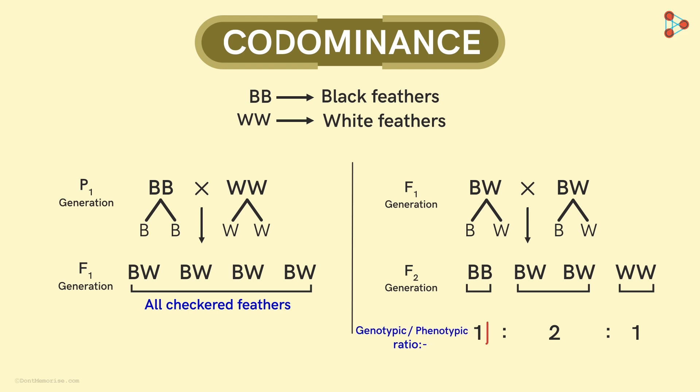We get one black, two speckled and one white offspring in the F2 generation. This is the phenotype. And what about the genotype? We get one offspring with the genotype BB, two with BW and the last with genotype WW. This is how co-dominance is seen in the chicken which gives us a completely different phenotype.